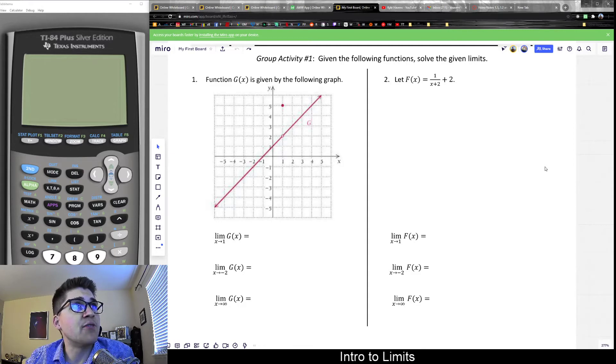So number one, it says the function g of x is given by the following graph. It asks us to figure out the limit as x approaches one of g, the limit as x approaches negative two of g, and the limit as x approaches infinity of g.